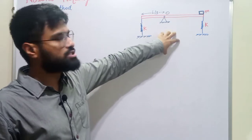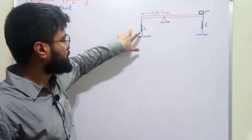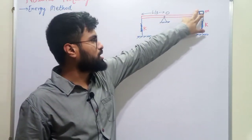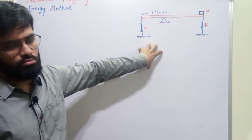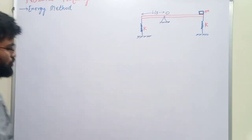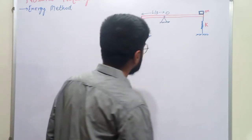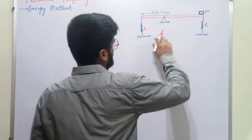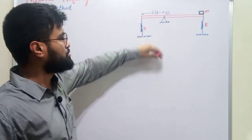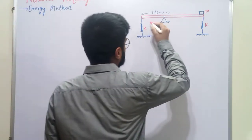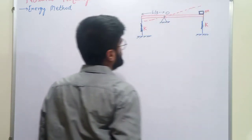In the energy method, I will write the total energy of this system — for this spring, for this rod, for the small mass m, and for the other spring as well. Consider that we disturb this mechanical system so that it can have vibration.